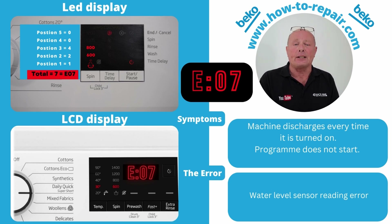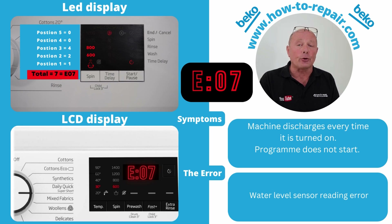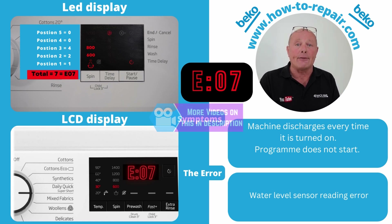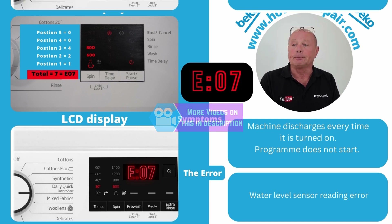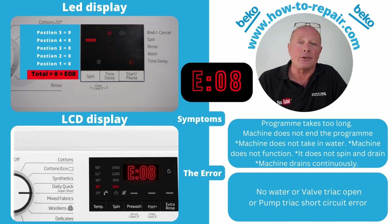Error code 7 is normally related to the pressure sensor. You will need to check the wiring and test the pressure sensor, which requires a specialist meter that measures frequency. E07 is displayed on the LCD; on the LED display, positions 1, 2, and 3 are illuminated — 4 plus 2 plus 1 equals 7, giving error code 7. A detailed video is available on testing this component.